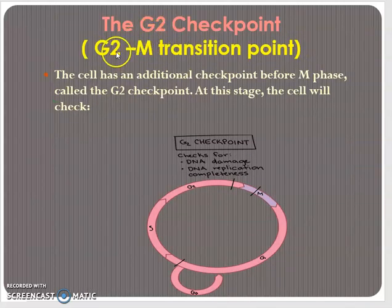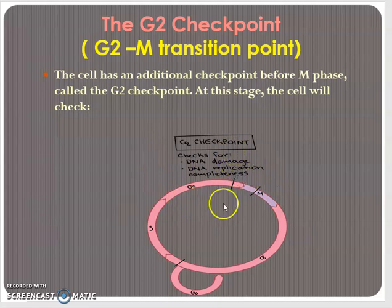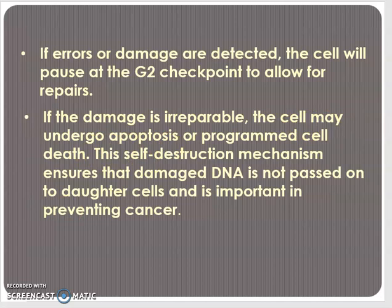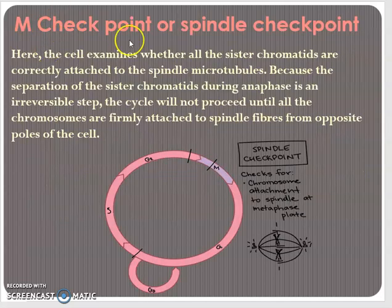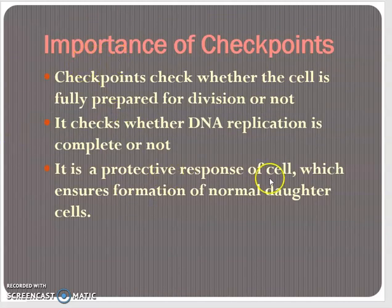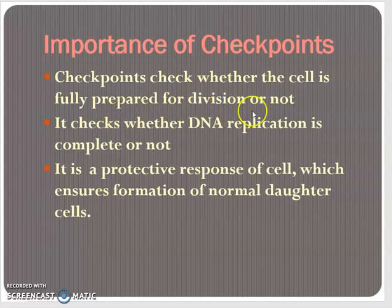The G2 checkpoint, or G2-M transition point, checks for DNA damage and whether DNA replication is complete. If damage is detected, the cell pauses at G2 checkpoint and allows for repair. If the damage is irreparable, the cell may undergo apoptosis, or programmed cell death. The M checkpoint is at metaphase and checks whether chromosomes are properly attached to the spindle fibers. These three checkpoints ensure the formation of a normal daughter cell, checking whether the cell is fully prepared for division — it is a kind of protective response of the cell.